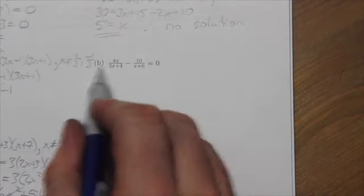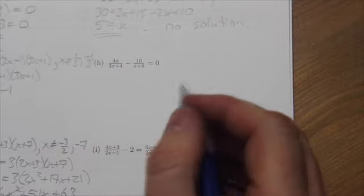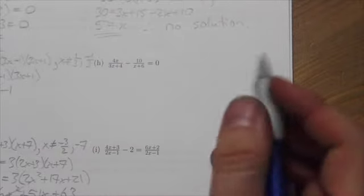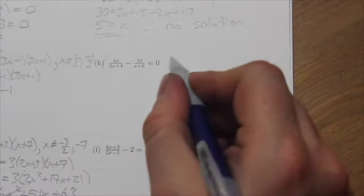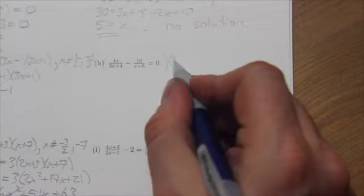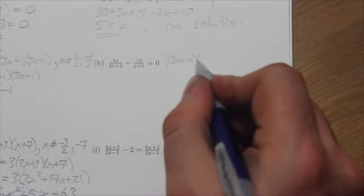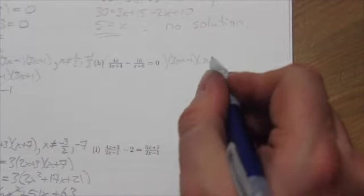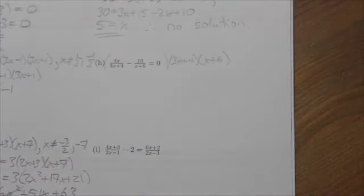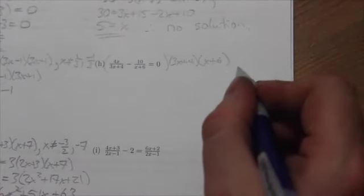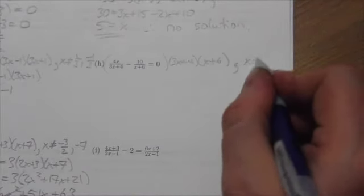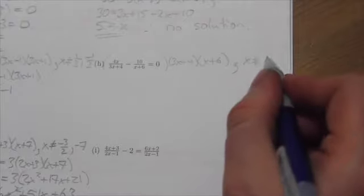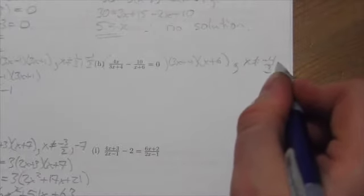Question H. Looking at the two terms here, I'm looking for something to factor, but there's really nothing to factor. So what I'm going to do is multiply through by the least common denominator, which will be 3x plus 4 times x plus 6, with the stipulation that x is not allowed to be negative 4 thirds or negative 6.